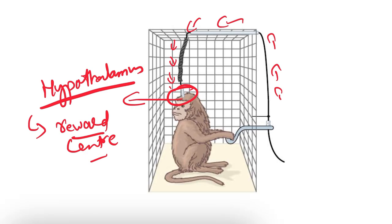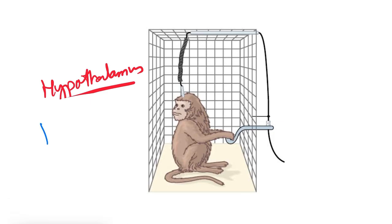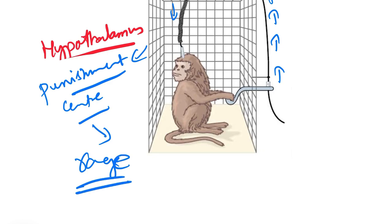Similarly, when the electrode is placed in the punishment center — the periventricular region of the hypothalamus — whenever the experimental animal presses the lever, the electrical signal goes and stimulates this punishment center of the hypothalamus. That will cause a very unpleasant feeling leading to a rage or anger situation. The animal will try not to touch the lever again because whenever it does, the punishment center is activated and an uncontrolled anger or rage is seen.